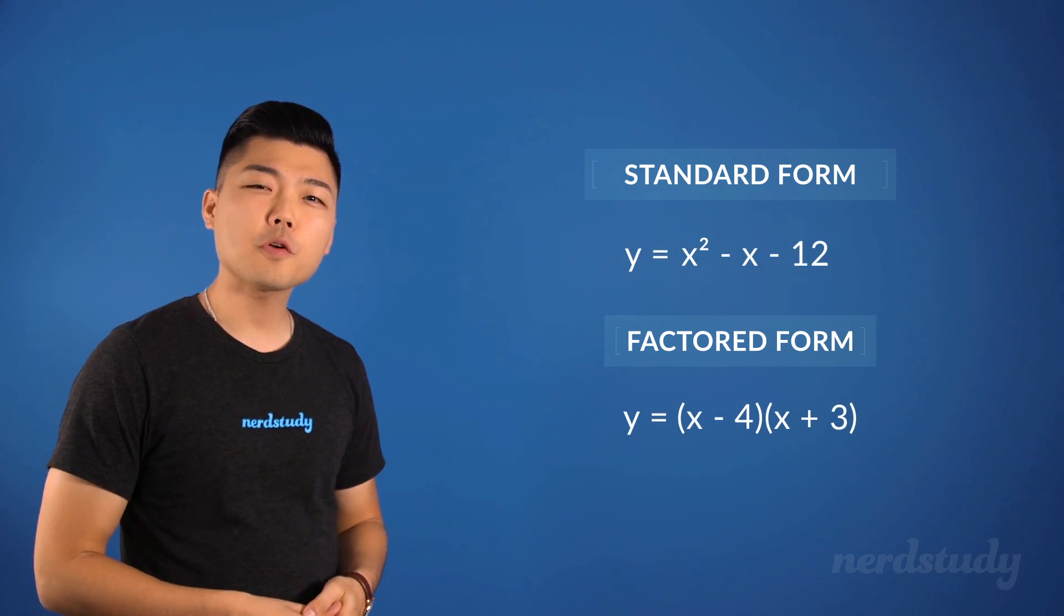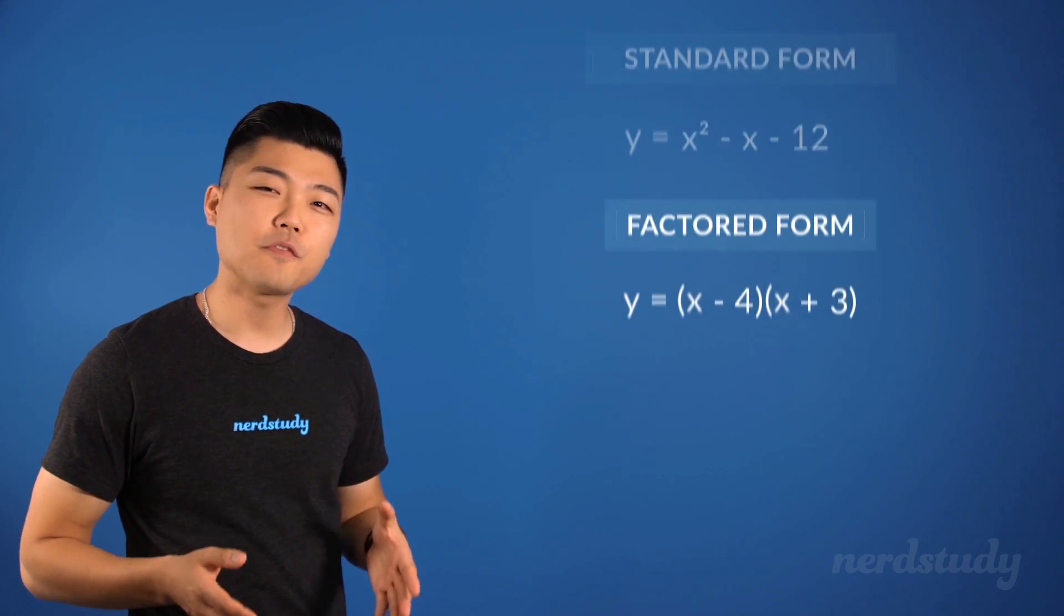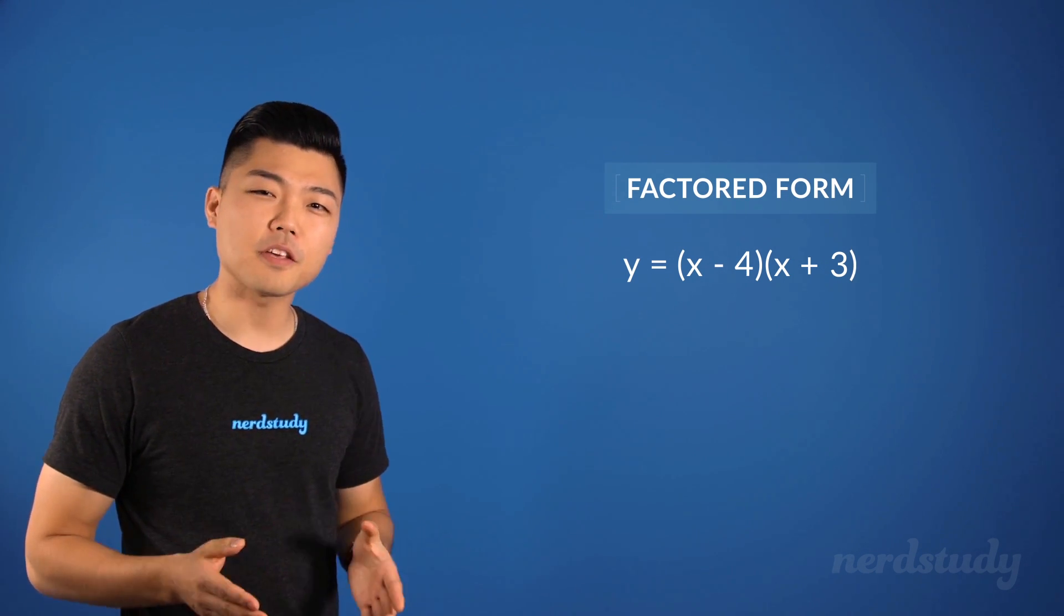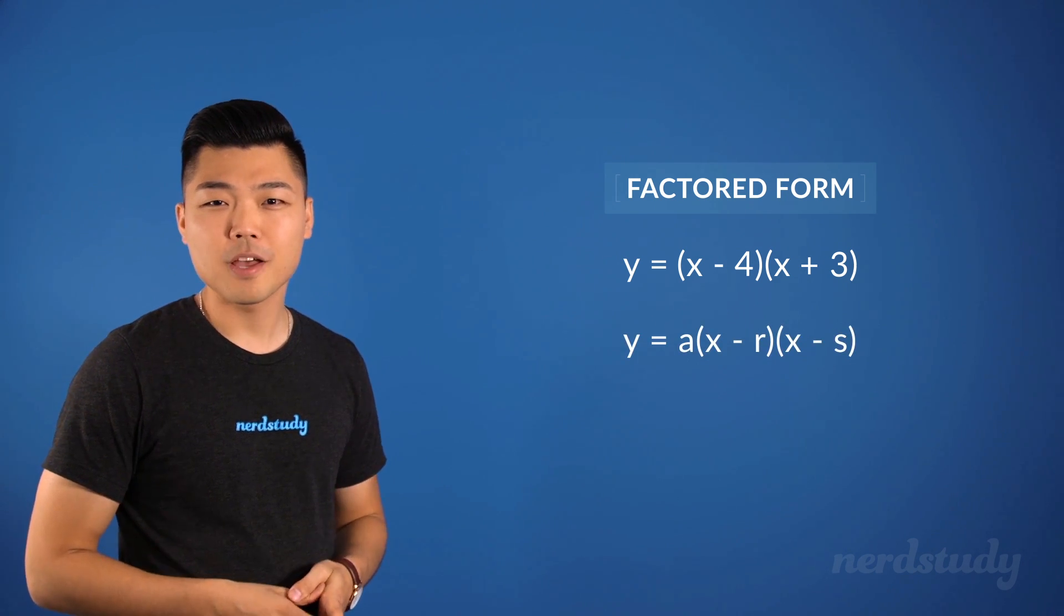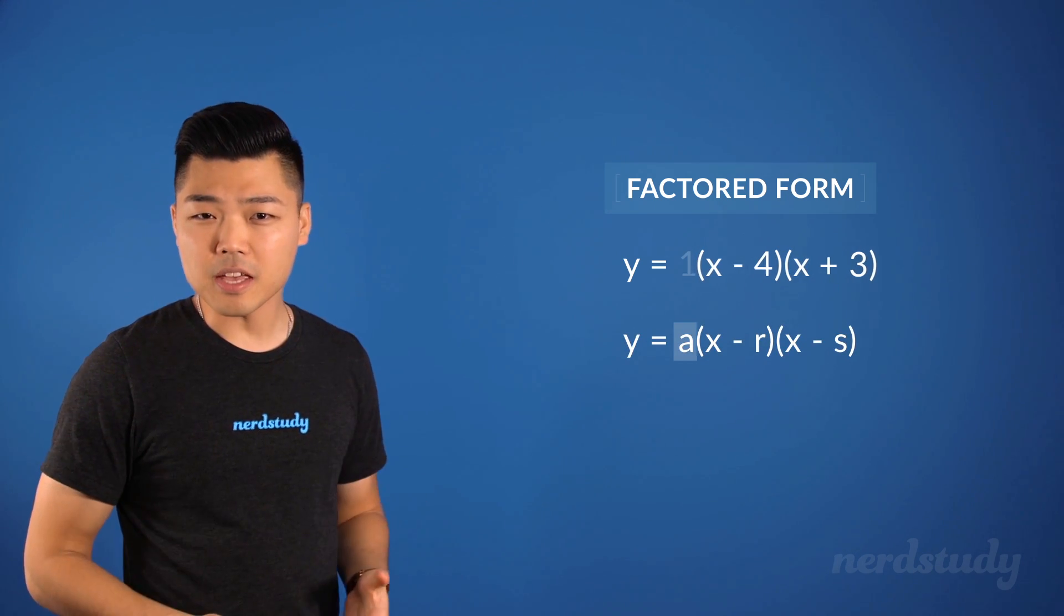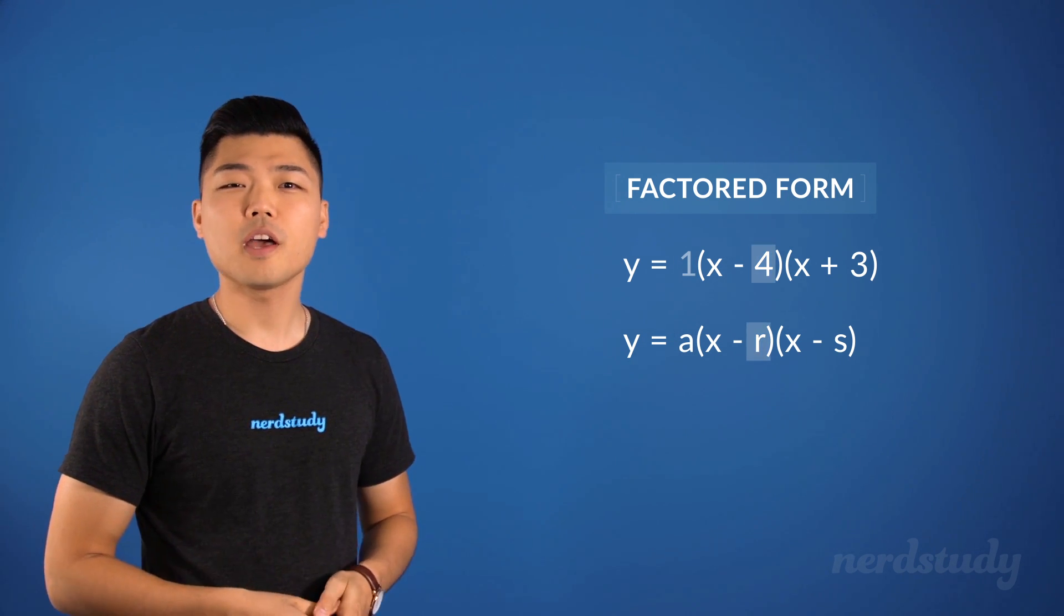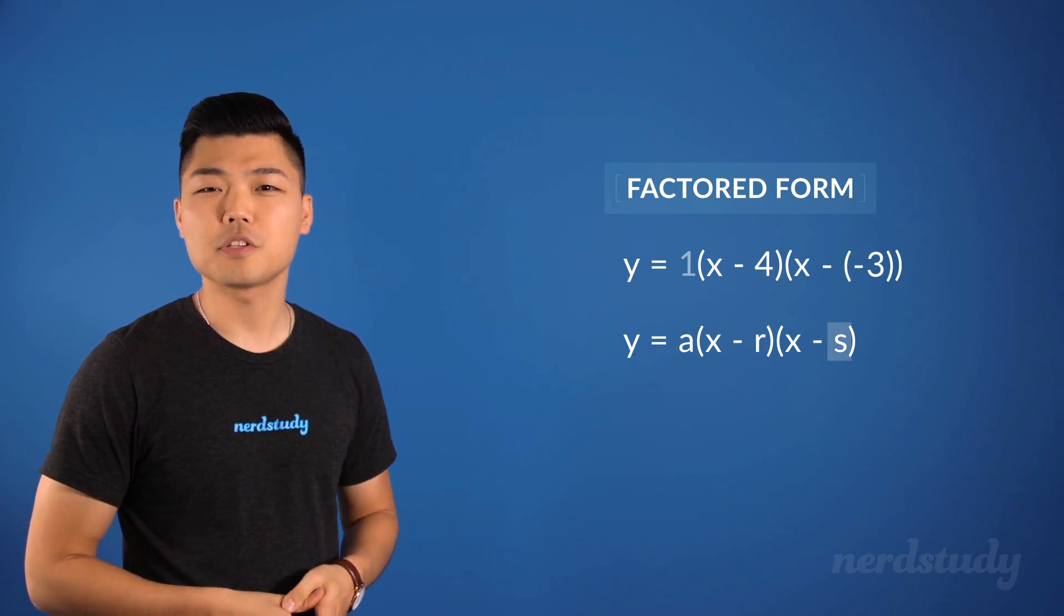So notice how by factoring this we've landed upon the factored form already. Now if we compare this to the general equation, then we see that our a is equal to 1, our r is equal to 4, and our s is equal to negative 3.